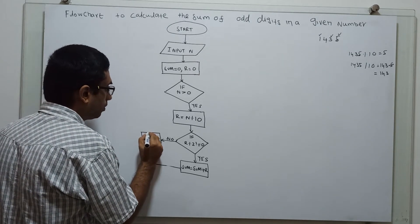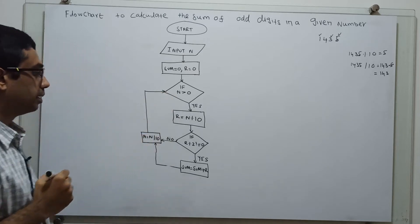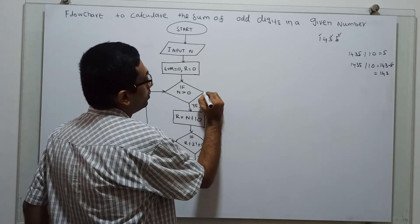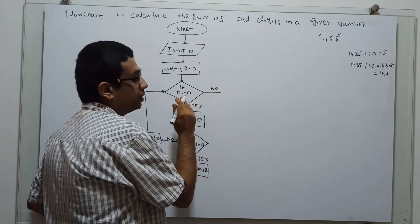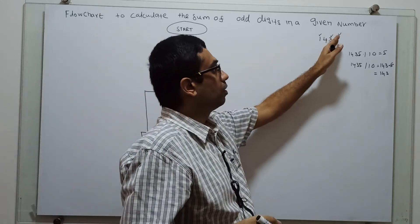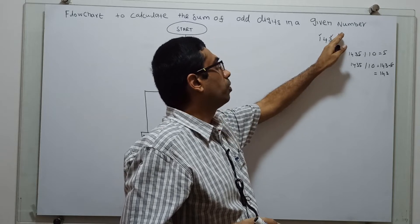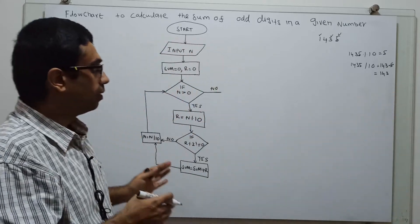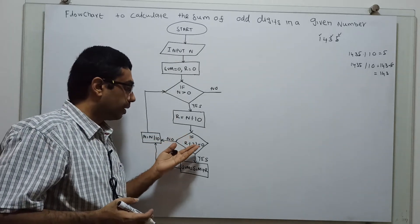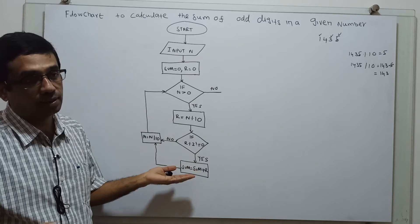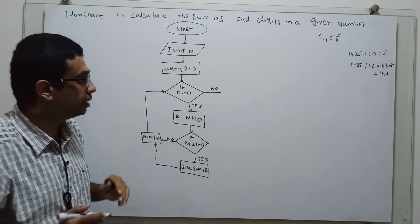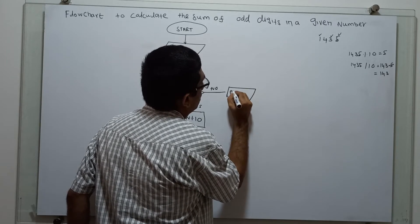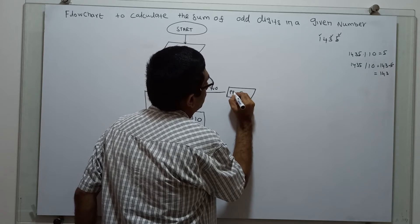Now I am connecting back to the outer loop. So when n greater than 0 is true, the steps are repeated. Otherwise, when n becomes 0 — after repeatedly dividing: 1435 → 143 → 14 → 1 → 0 — all digits are extracted and odd digits are added to the variable sum while even digits are skipped. When n becomes 0, I print the sum.